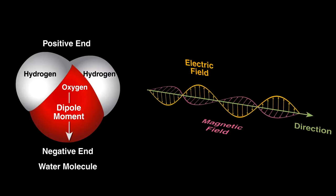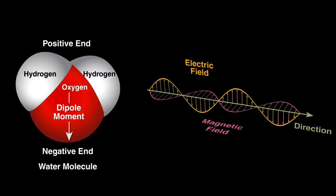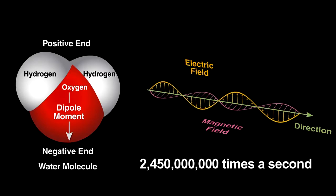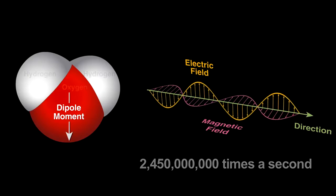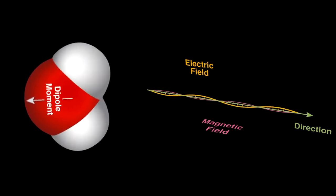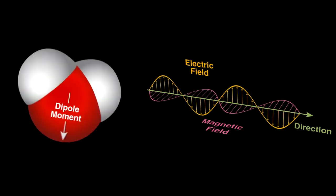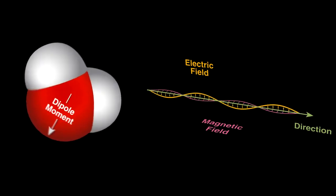Microwave has electrical and magnetic fields that change rapidly. The electric field changes direction at about 2.4 billion per second. Thus, the same concept occurs where water molecules try to align with the field direction and will rotate back and forth.